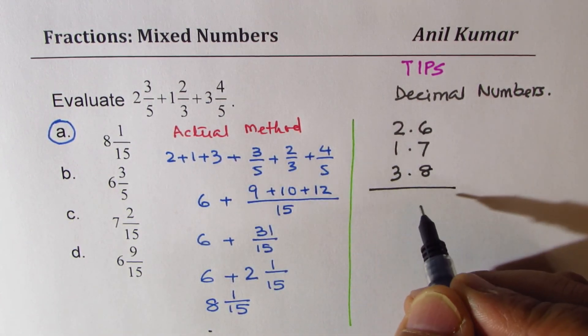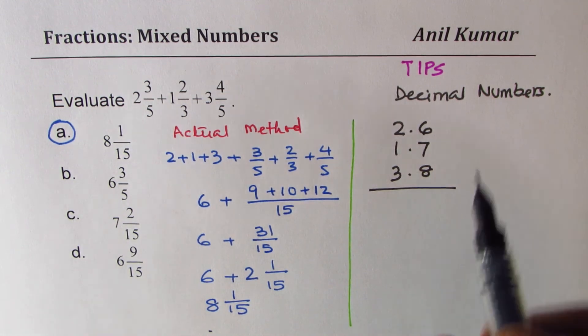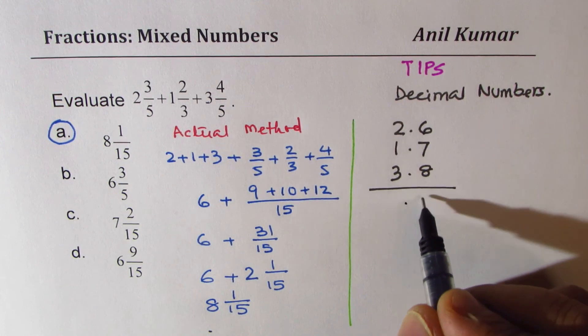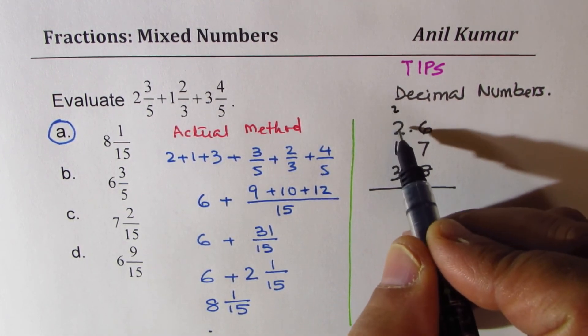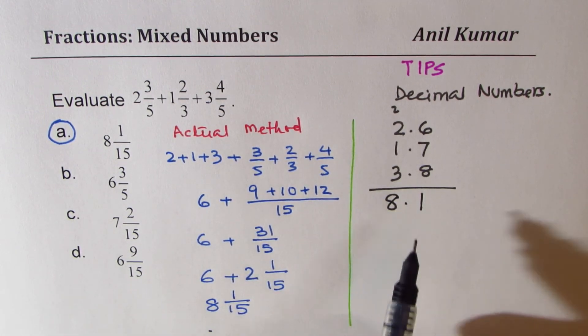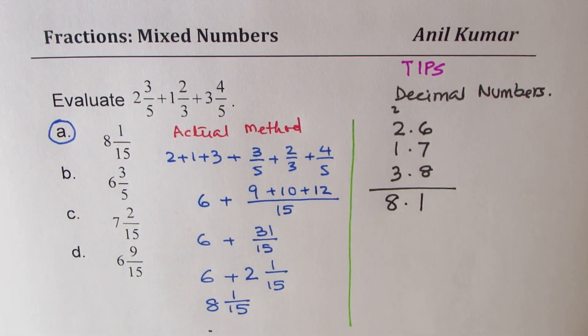Add them up. So 6 plus 7 is 13, 21, 1, 2. So you get 2, 2, 4, 5, 6, 7, 8. Slightly more than 8. So option A is the right option. Does it make sense to you? So that is how you could do it.